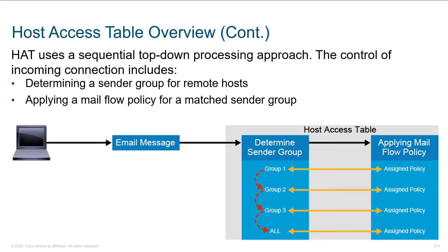Very similar to many of the other rules we create within Cisco devices, we've got top-down processing. Anytime there's top-down processing, we want to make sure that our most specific rules are closer to the top. As a packet comes in, we're looking for a match and it gets assigned a policy. If I have a broad statement at the top and a specific statement below it, that broad statement is going to make a match first. Remember, the order of operations is important.